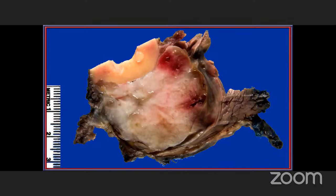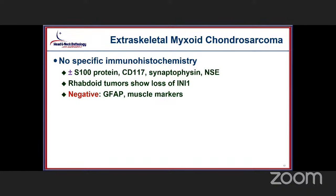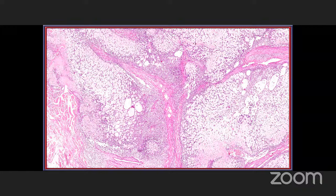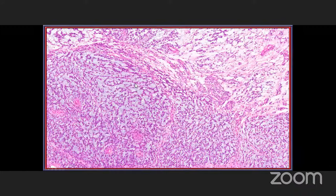It can have a very myxoid appearance macroscopically. There is no specific immunophenotype, which is why it is so challenging — it should not have muscle markers or GFAP, and shows plus-minus reactivity with S100 protein, CD117, synaptophysin, and NSE. If you have a rhabdoid type morphology, loss of INI1 can be seen. The tumor has a lobular architectural arrangement with myxoid matrix material present throughout, showing myxoid material between strands and islands of cells in a reticulated appearance, with prominent vascularity.